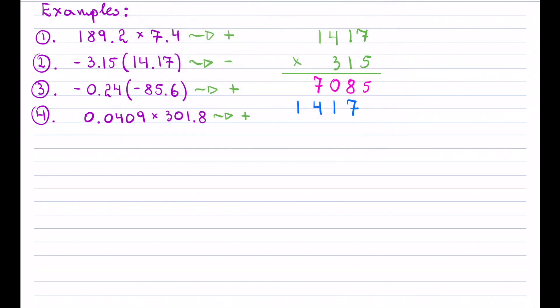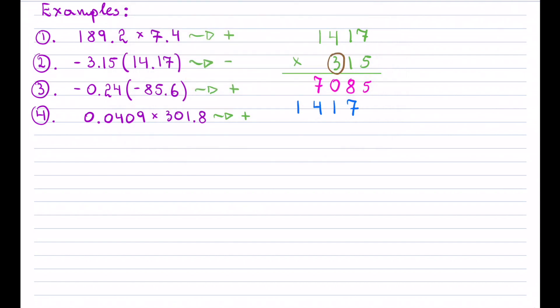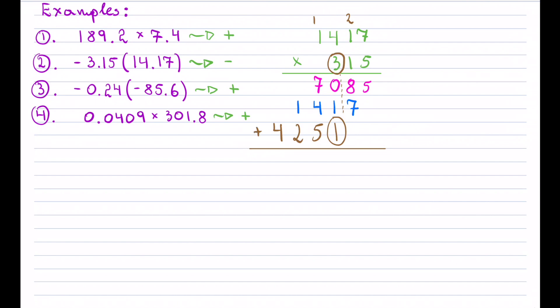Now shifting over to the 3: 3 times 7 is 21, carry the 2 — notice I start right underneath the 3 since it's in the hundreds place value. 3 times 1 plus the 2 is 5, nothing to carry; 3 times 4 is 12, carry the 1; 3 times 1 plus the 1 is 4.